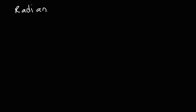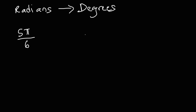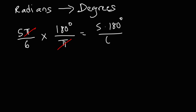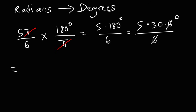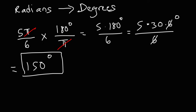What about converting in the other direction? If we're given an angle in radians and want to convert it to degrees — let's start with 5 pi over 6 radians. To convert to degrees, flip the fraction: instead of multiplying by pi over 180, multiply by 180 degrees over pi radians, so the unit pi cancels. We get 5 times 180 divided by 6. Since 180 equals 30 times 6, we cancel the 6 and get 5 times 30. 5 times 3 is 15, so adding the zero gives 150. So 5 pi over 6 radians is equal to 150 degrees.